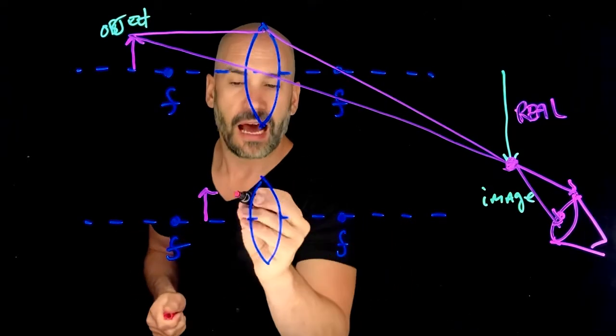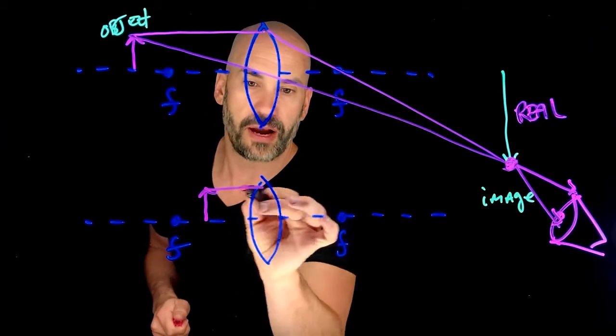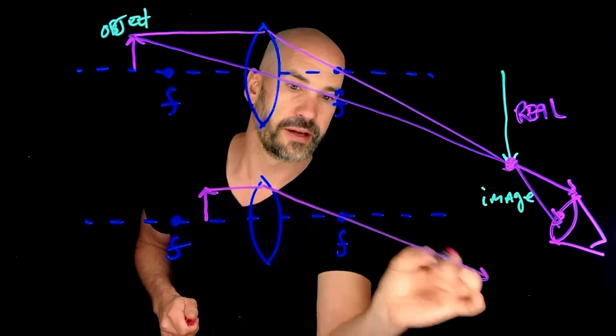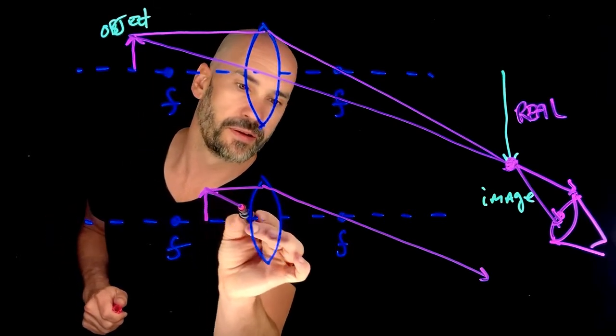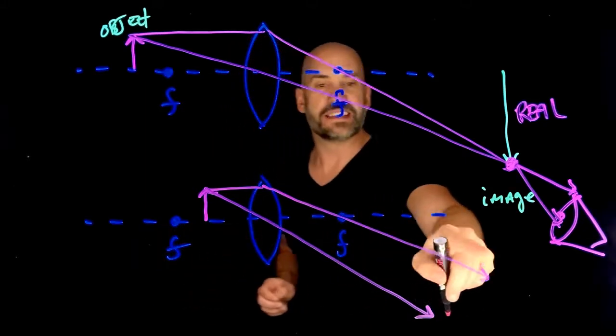Well, I do one special ray and that goes parallel to the lens and then goes through the focal length. And then I do another special ray that goes straight to the center. What do you see is different here?